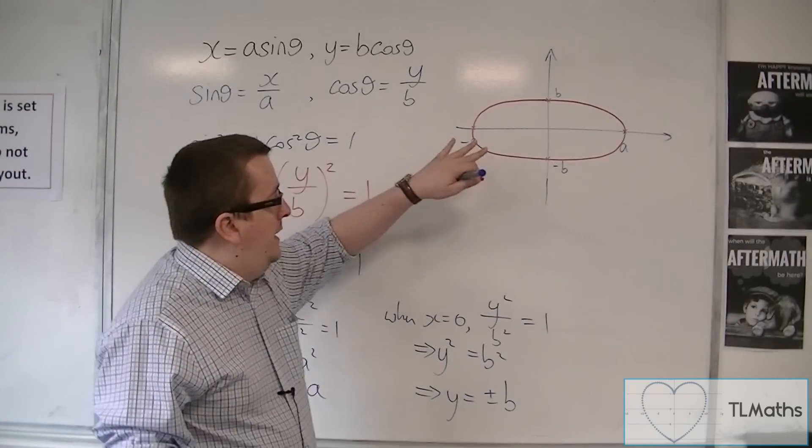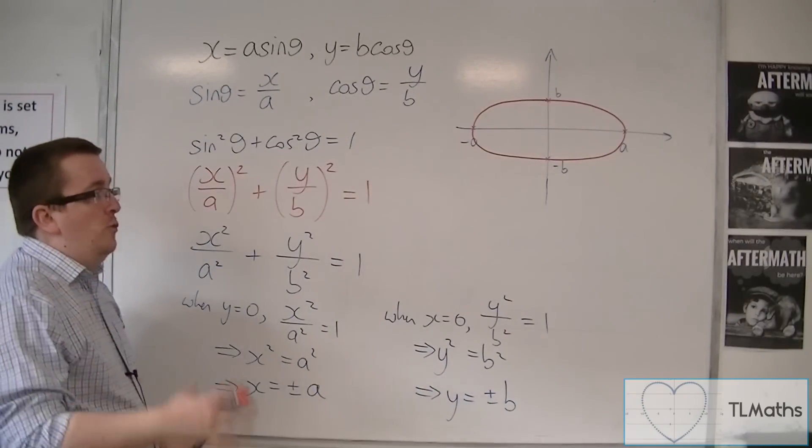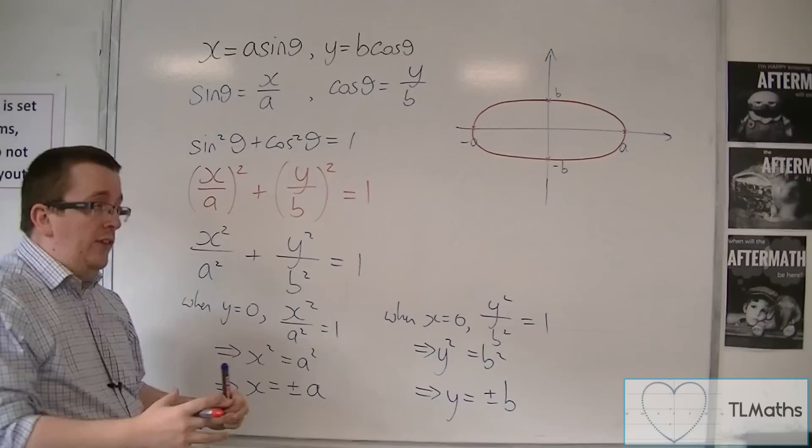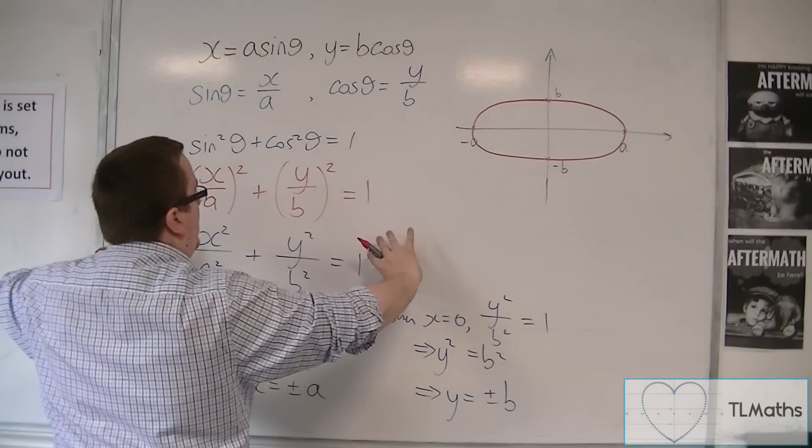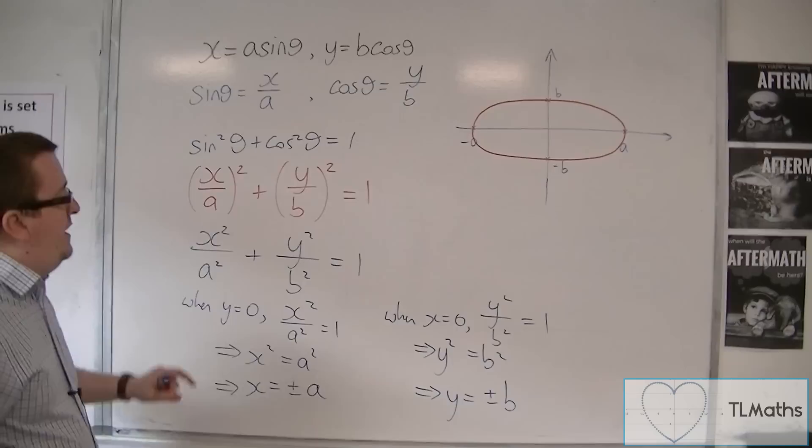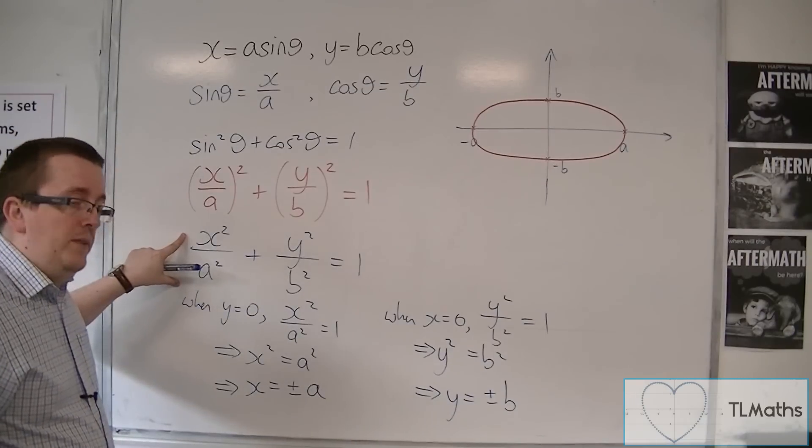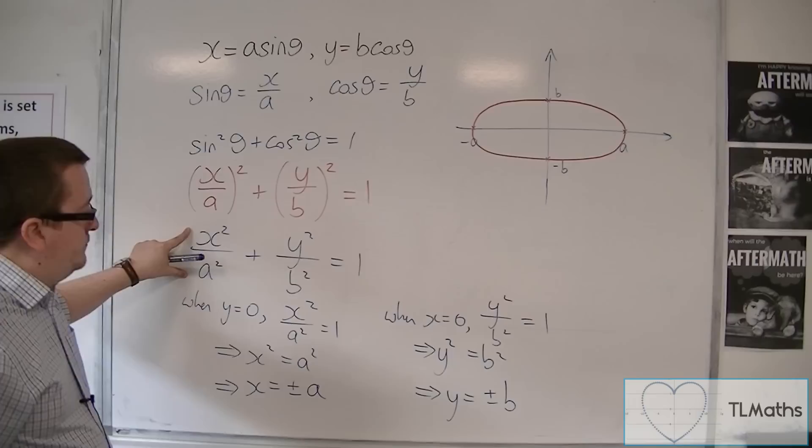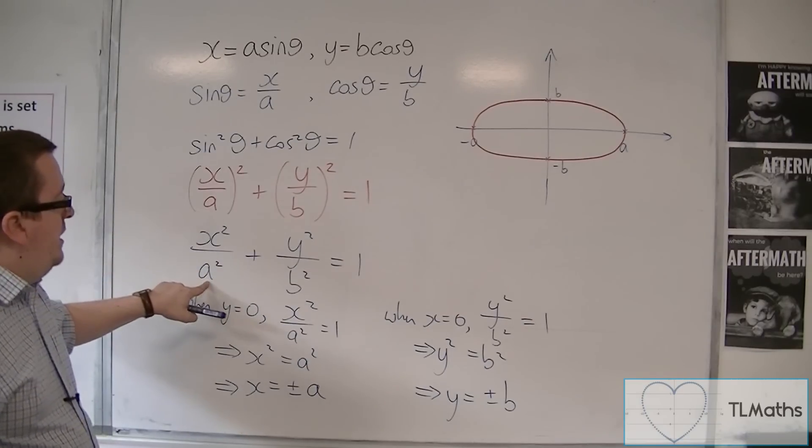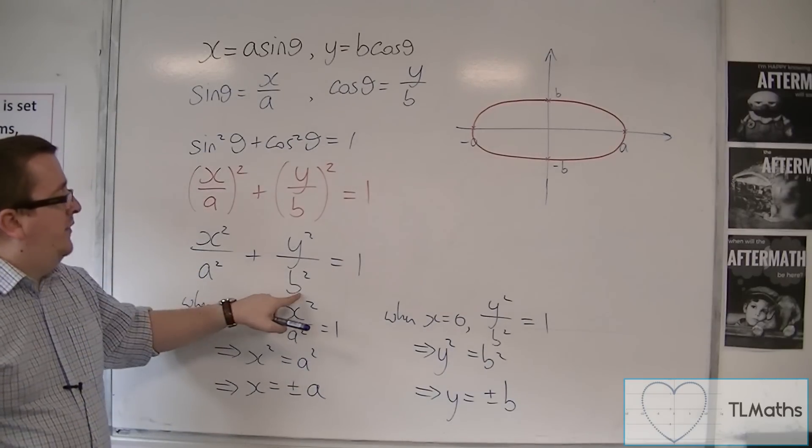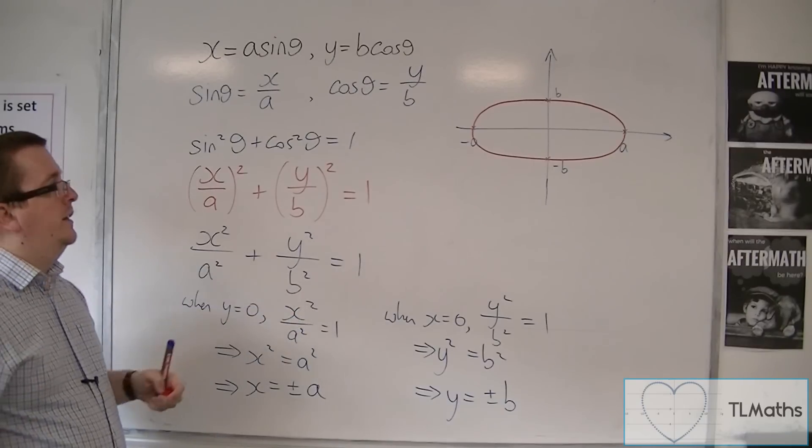So this is the shape that goes through A and minus A on the X axis, B and minus B on the Y axis, and is given by this equation here. This defines an ellipse centered at the origin, crossing the X axis at A and minus A, and crossing the Y axis at B and minus B.